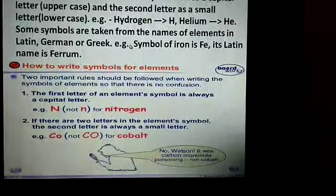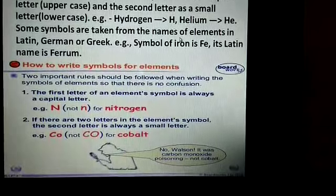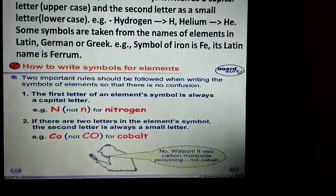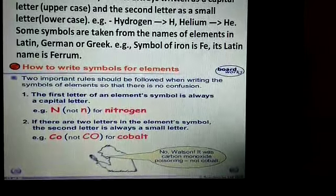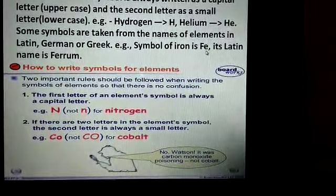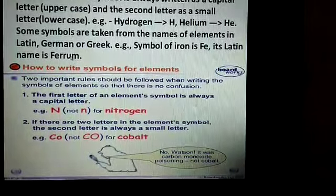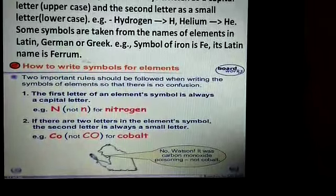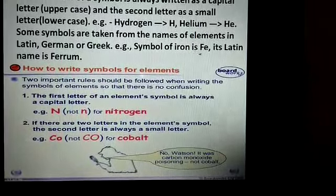Some symbols are taken from the names of elements in Latin, German, or Greek. For example, symbol of iron is Fe and its Latin name is Ferrum. So symbol of iron is taken from Ferrum, that is Fe.